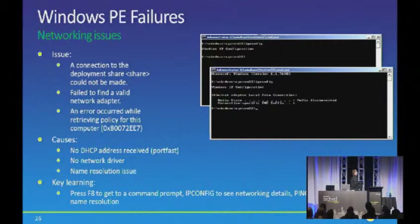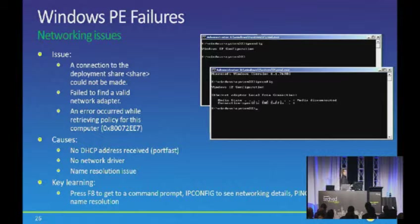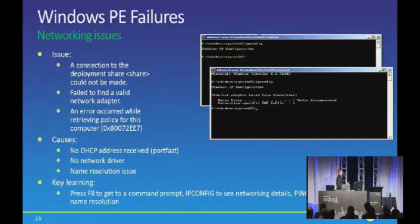We also see situations where in the full operating system you're running with a group policy that applies additional DNS suffixes to your network adapters, enabling you to resolve names. When you're in Windows PE, there's no group policy, so you don't get those additional suffixes and might not be able to resolve your computer names. In those cases, you can use NSLookup and other tools to try to verify whether you can talk to the computer by name from within Windows PE.